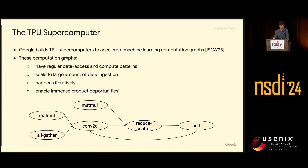These workloads resemble conventional HPC applications: a lot of matrix multiply operations, very regular data access patterns. They scale to a large amount of training data, and the model can be very large in today's LLMs. So we build chips for that. Having fast iteration of these models exposes immense product opportunities, like recommendation models and generative AI models. So we want to explore these things as fast as possible.